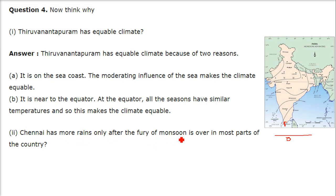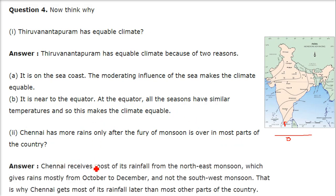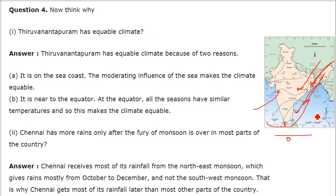Chennai has more rains only after the fury of monsoon in most parts of the country. Chennai receives most of its rainfall from the northeast monsoon, which gives rains mostly from October to December, and not the southwest monsoon. The southwest monsoon doesn't give moisture when travelling over land areas. But when the northeast monsoon winds come down to the Coromandel Coast, they gain moisture from the warm ocean and then they rain. So Chennai receives most of its rainfall later than most other parts of the country.